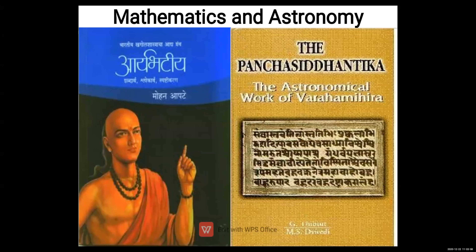In the Pancha Siddhantika, Aryabhata discussed the principles of Indian astronomy along with principles of astronomy from Greek, Roman, and Egyptian civilizations. The mathematician Brahmagupta, who lived in the seventh century, also had his texts translated into Arabic.